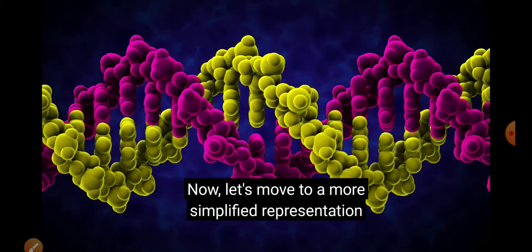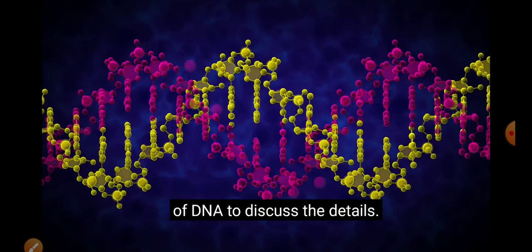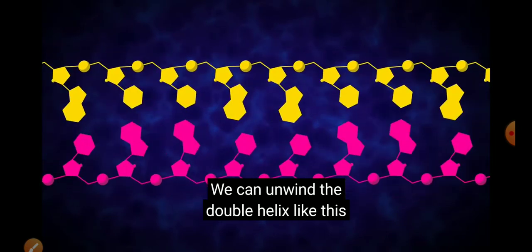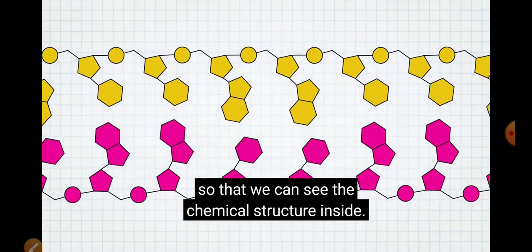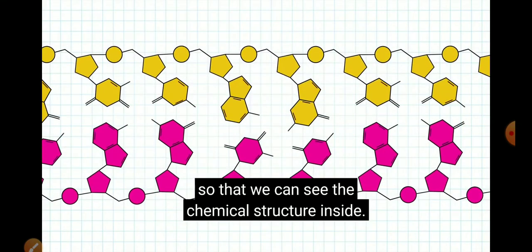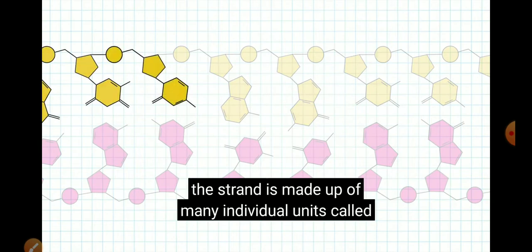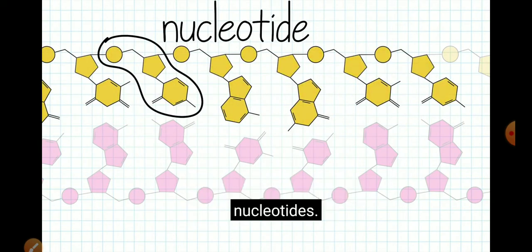Now, let's move to a more simplified representation of DNA to discuss the details. We can unwind the double helix like this, so that we can see the chemical structure inside. Each strand is a polynucleotide, meaning the strand is made up of many individual units called nucleotides.